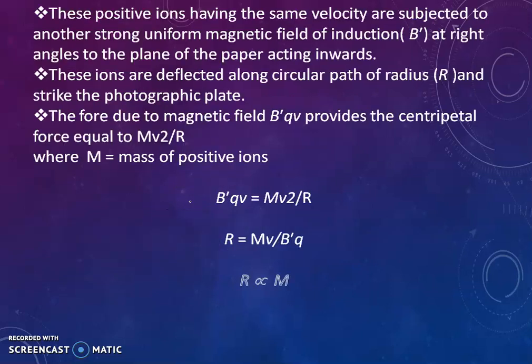Now these positive ions having same velocity are subjected to another strong uniform magnetic field of induction B dash. It is again right angles to the plane of the paper acting inward. These ions are now deflected along circular path of radius R and strike the photographic plate. Because of the application of perpendicular uniform magnetic field, the ions get deflected from their original path and travel the circular path. The force due to the magnetic field is BQV, which provides the centripetal force.